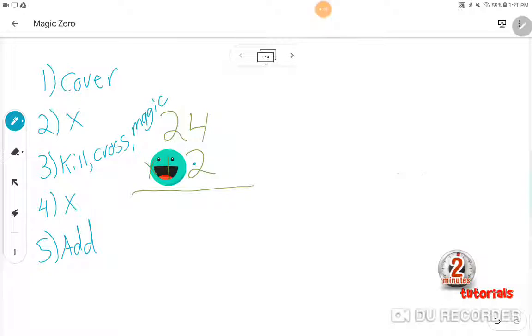First thing we're going to do is we're going to do 2 times 4. 2 times 4 is 8. And then you've got to go diagonal. 2 times 2 is 4. That is our first step. We covered and then we multiplied.